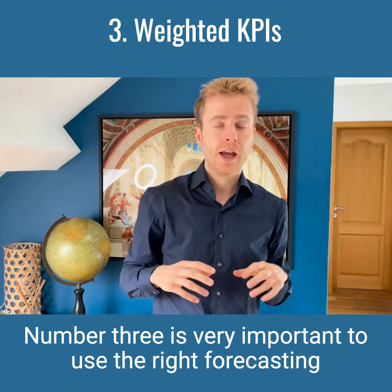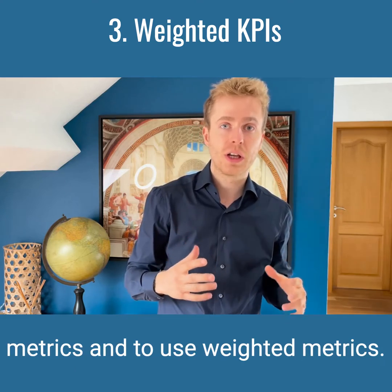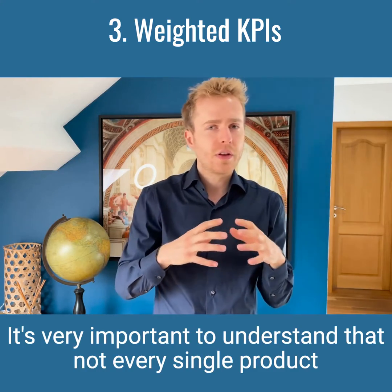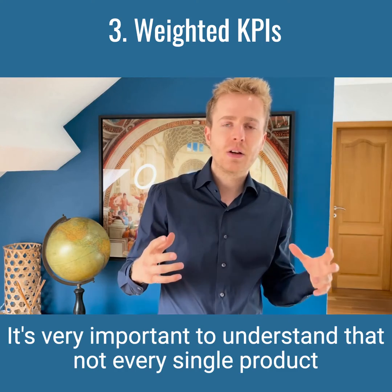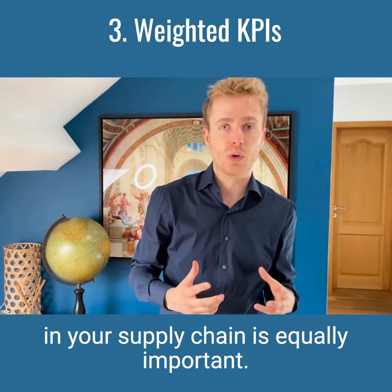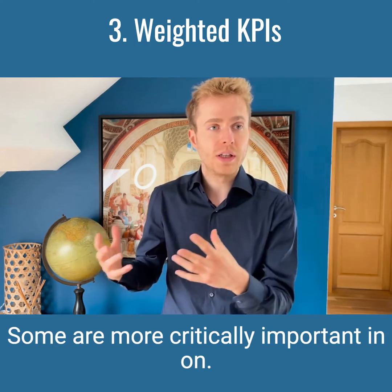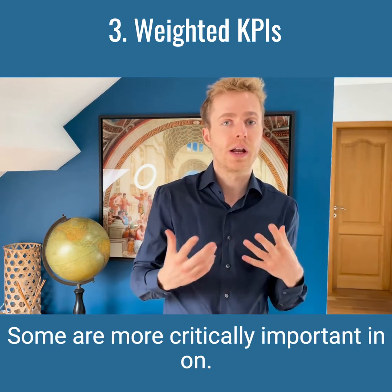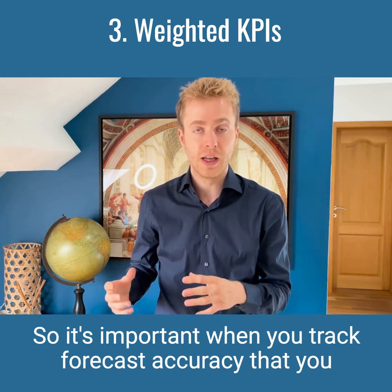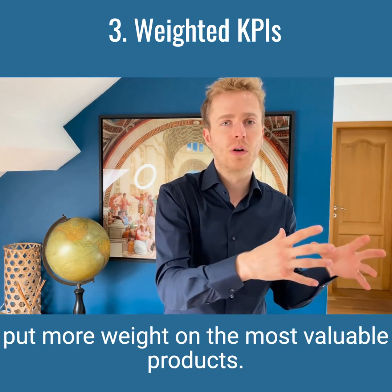Number three, it's very important to use the right forecasting metric and to use weighted metrics. It's very important to understand that not every single product in your supply chain is equally important. Some are worth more money, some are more critically important, and so on. So it's important when you track forecast accuracy that you put more weight on the most valuable products.